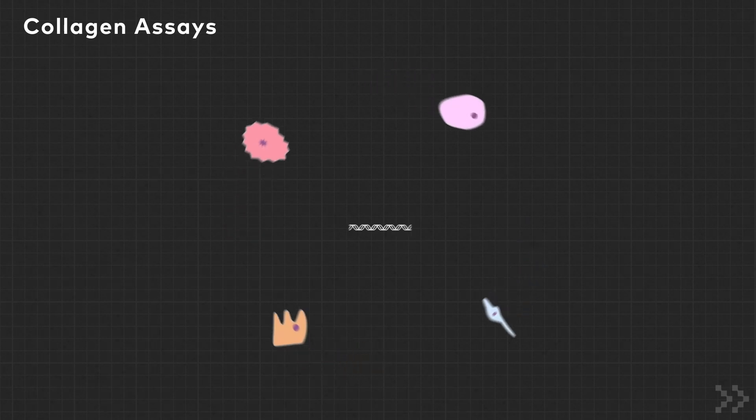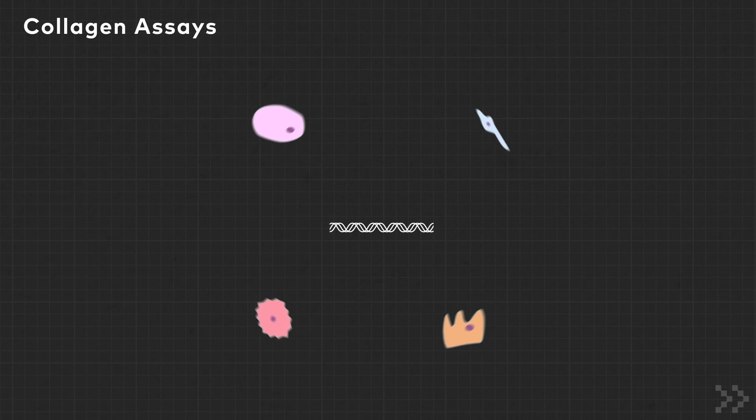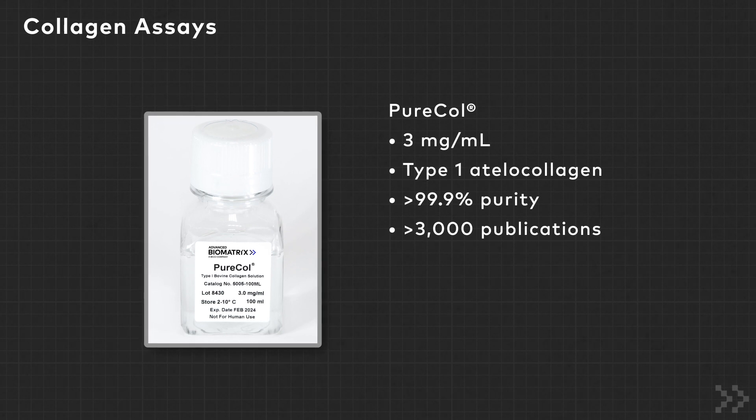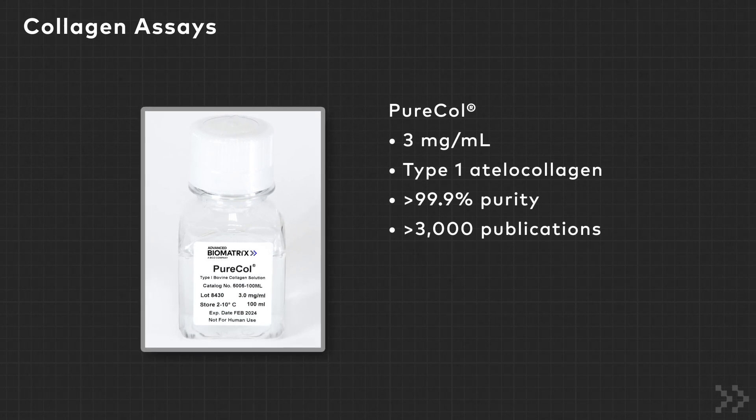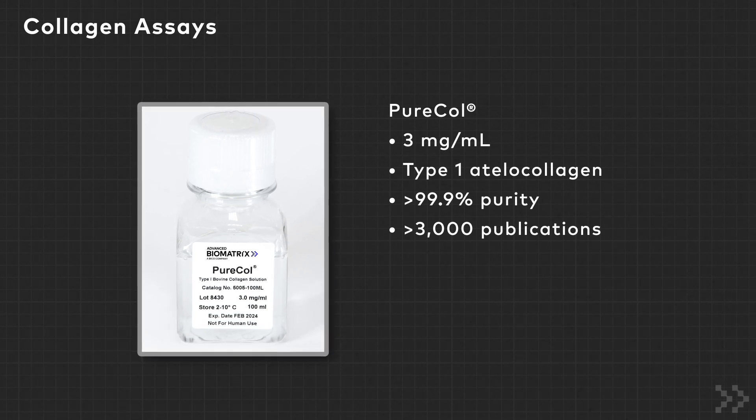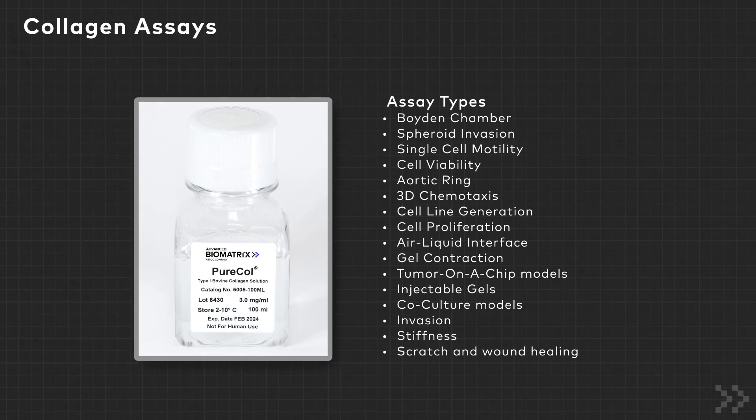Because collagen is the most abundant protein in the body and associates with the most cell types, it is the most widely used ECM protein across hundreds of assays. PureCal type 1 collagen, a 3 mg per milliliter solution of type 1A telocollagen, is our most popular product and has been cited in more than 3,000 publications. There are countless assays that utilize PureCal.